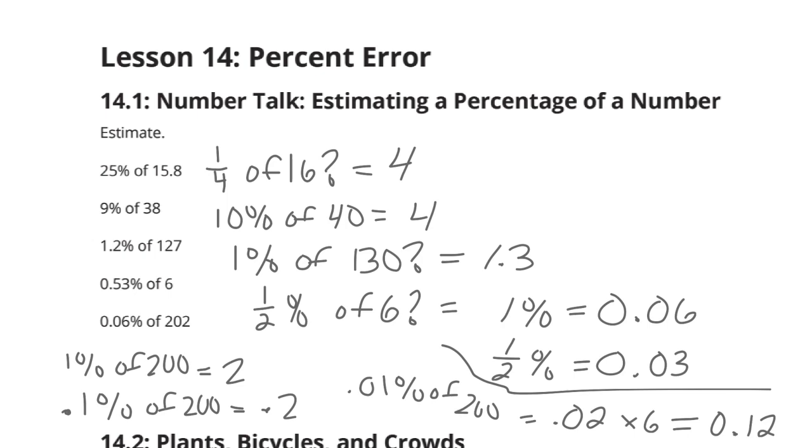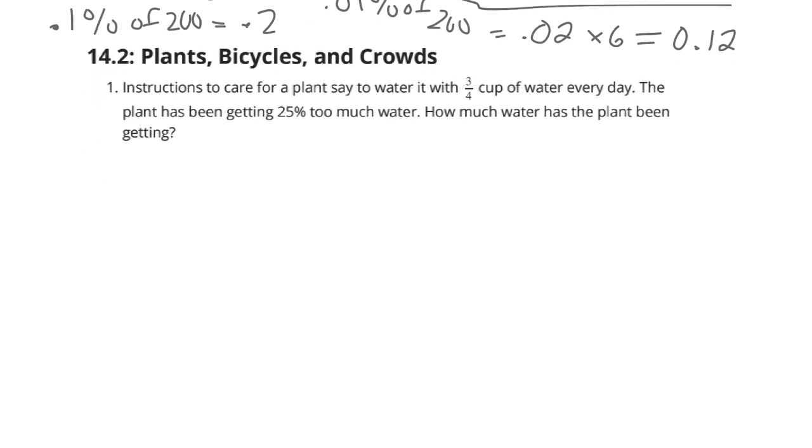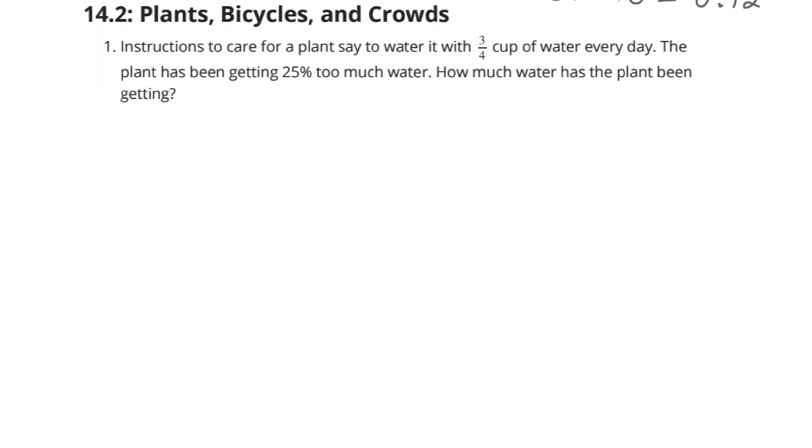Continuing on now. Plants, bicycles, and crowds. Instructions to care for a plant say to water it with 3/4 cup water every day. The plant has been getting 25% too much water. How much water has the plant been getting?